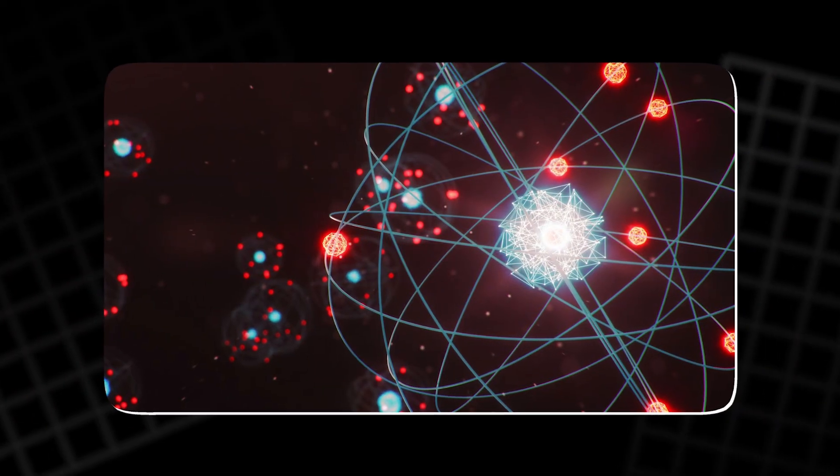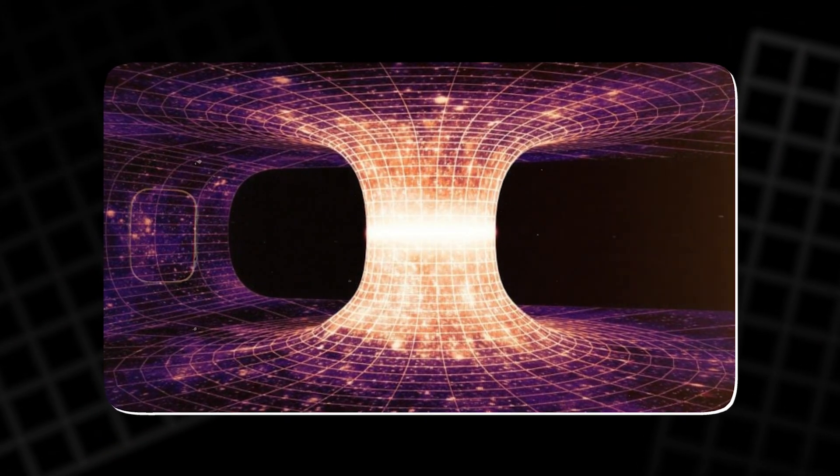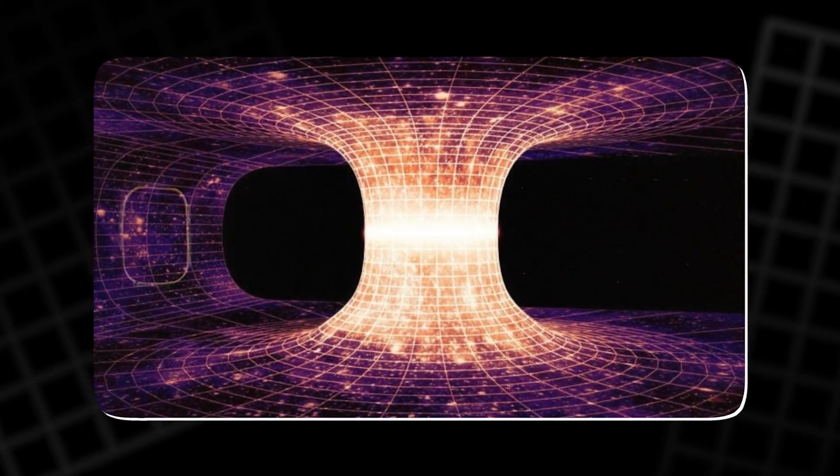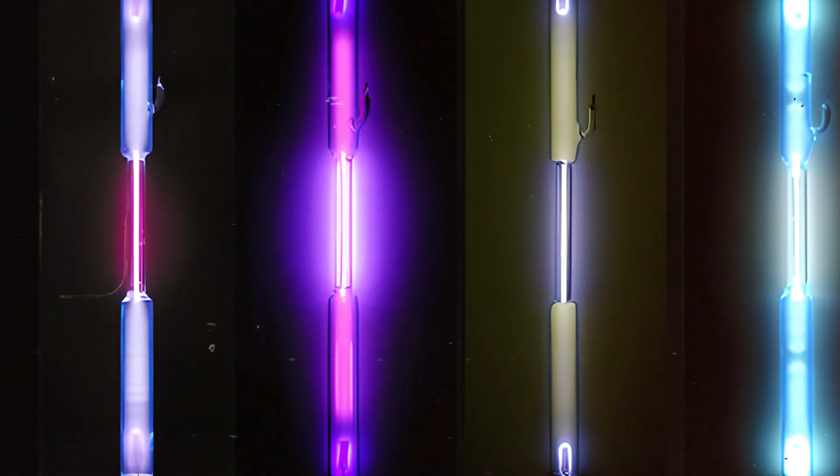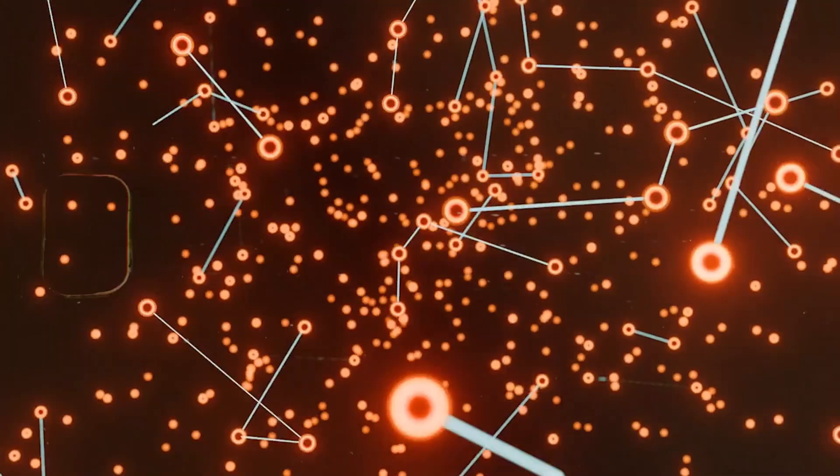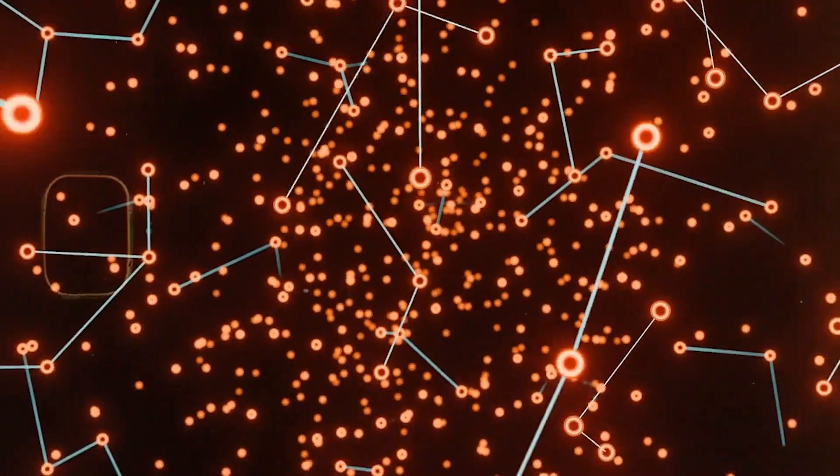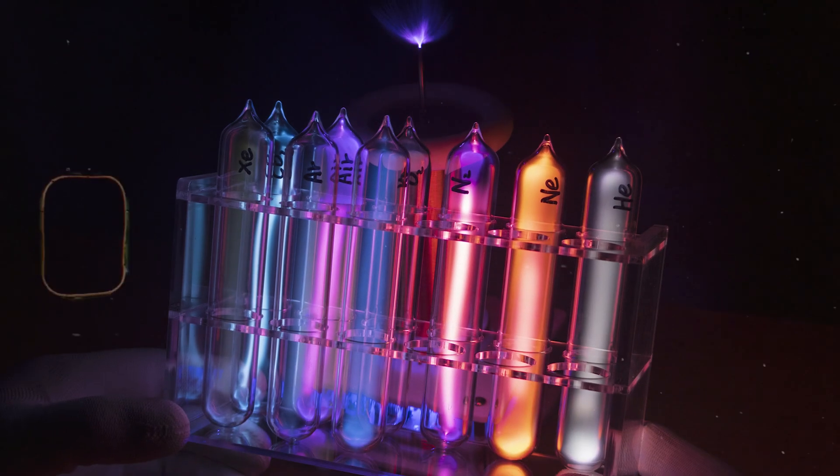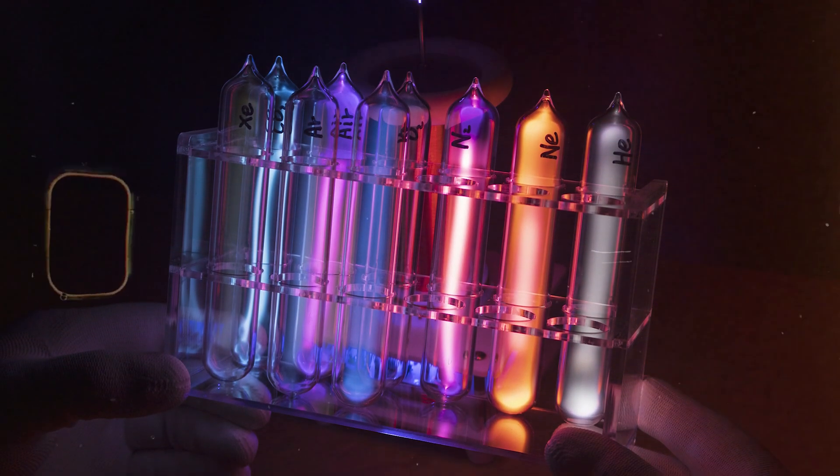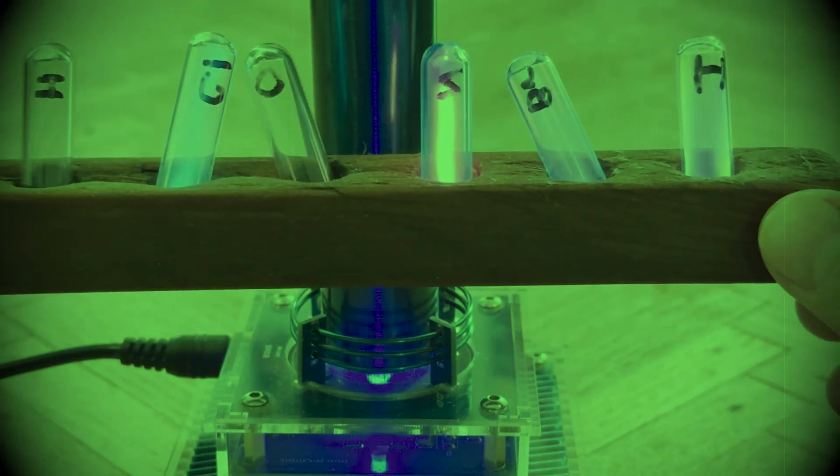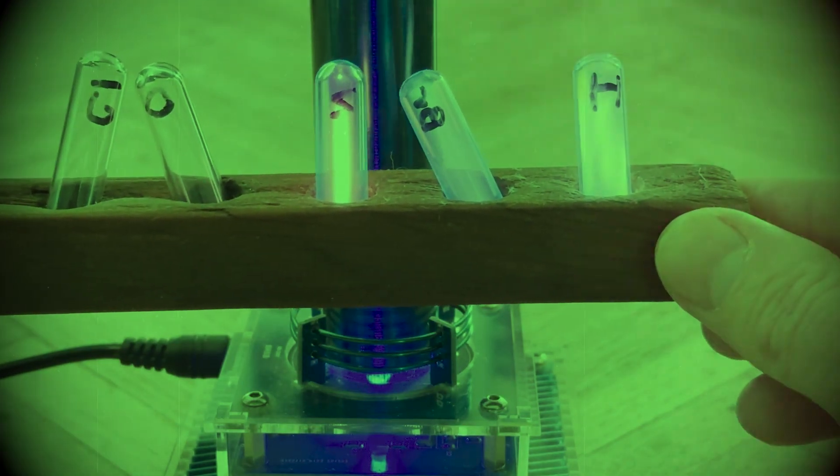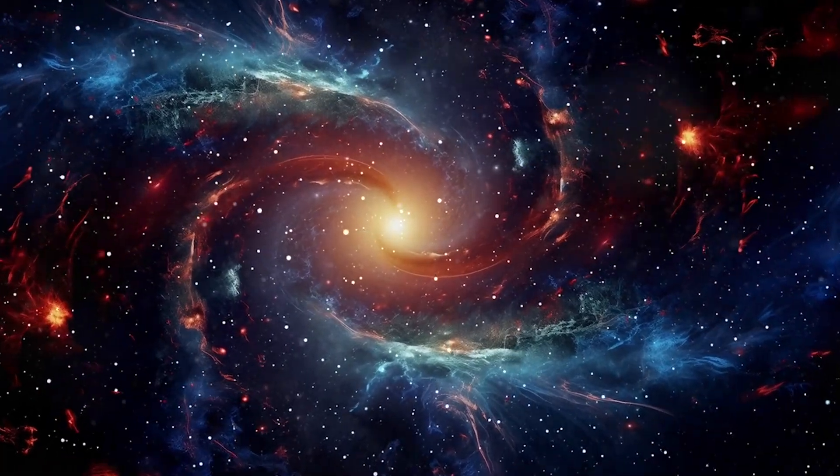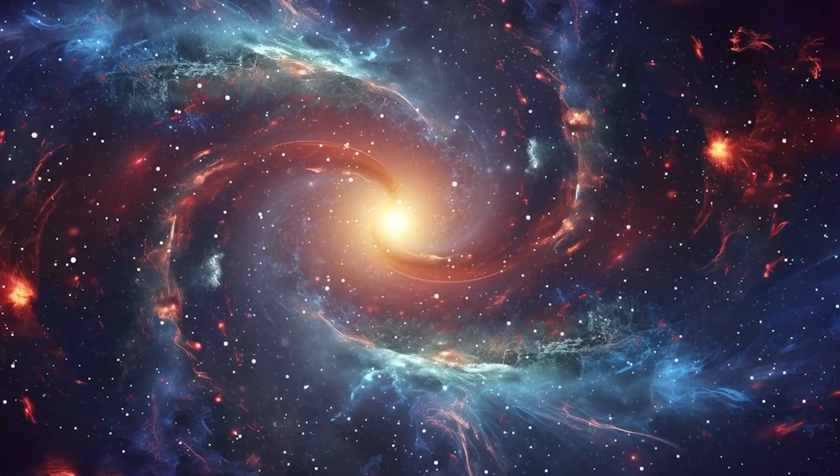It connects atomic structure, electromagnetic theory, and quantum physics into a single colorful experience. Each flicker of light reveals a story of electrons, energy, and balance. The beauty lies not only in what the eye perceives, but in the unseen order that makes it possible. The colors of the noble gases are more than decoration. They are proof that even in the simplest forms of matter, there exists a universe of complexity, waiting to shine.